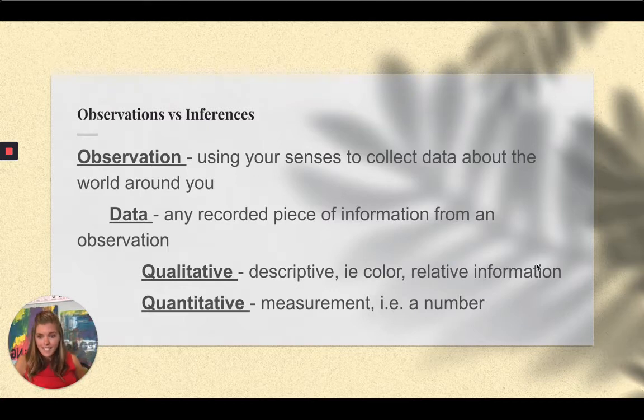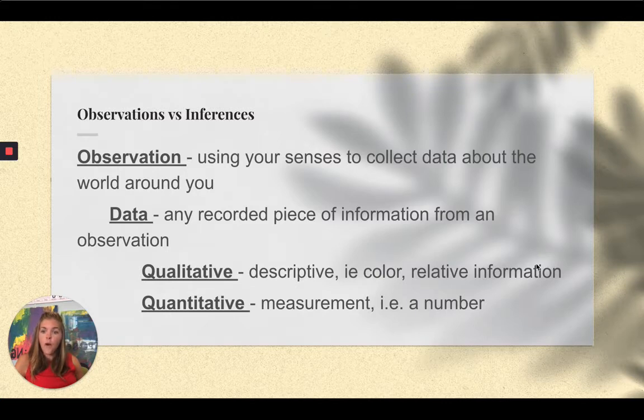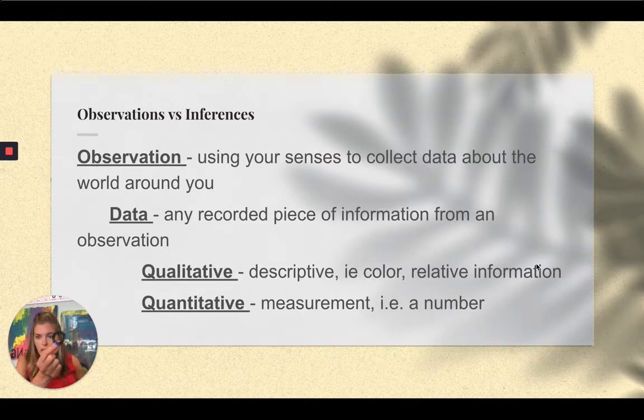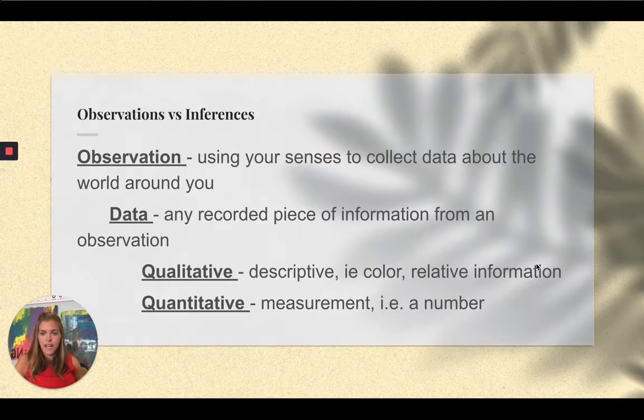Whereas a quantitative piece of data is a measurement, it's a number, it's a quantity. That's how you remember that. It's a quantity, it's a number. I have five fingers, I have one hairband, I have two eyes. All quantitative pieces of data.